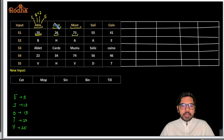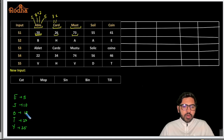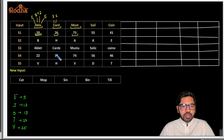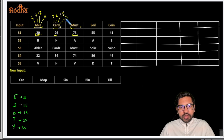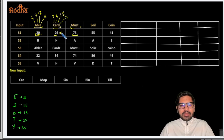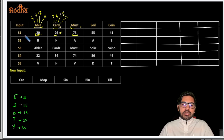Let's confirm from 'card': C is third, A is first, R is eighteen, D is four. So eighteen plus four is twenty-two, plus three is twenty-five, plus one is twenty-six. Yes, we are getting twenty-six. So step one is the sum of the positions of the alphabets. The new input is: cat, mop, sin, bin, and till.